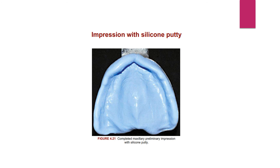For maxillary impressions with silicone putty, the procedure for manipulation, insertion, and making the impression is similar to impression compound, except that putty is supplied as a base and catalyst. The impression is removed in a snap. It is difficult to refine the impression, but pouring can be delayed. This is the completed maxillary preliminary impression with silicone putty.